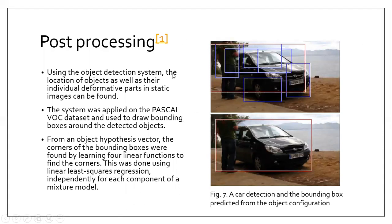Using this object detection system, we can find bounding boxes for the subparts as well as the overall object. The system was applied on the Pascal VOC dataset to draw bounding boxes around detected objects. The researchers investigated whether using bounding boxes of the subparts could give a better estimate of the bounding box of the entire object. As you can see, with only the root location detection, part of the car is missed; but once subpart data is incorporated, a much better bounding box for the car is obtained. This bounding box refinement is done using a linear least squares regression model.